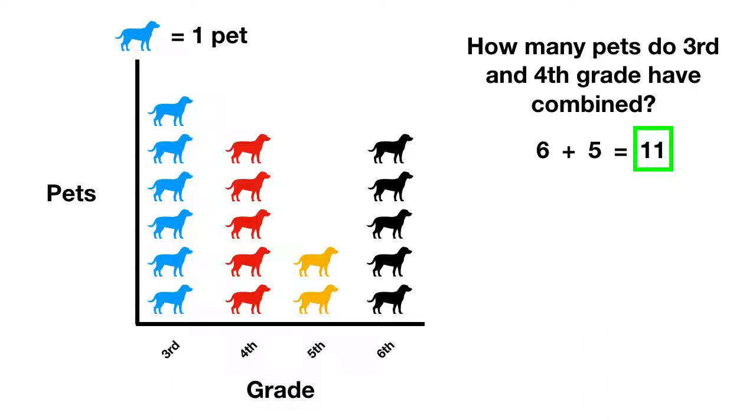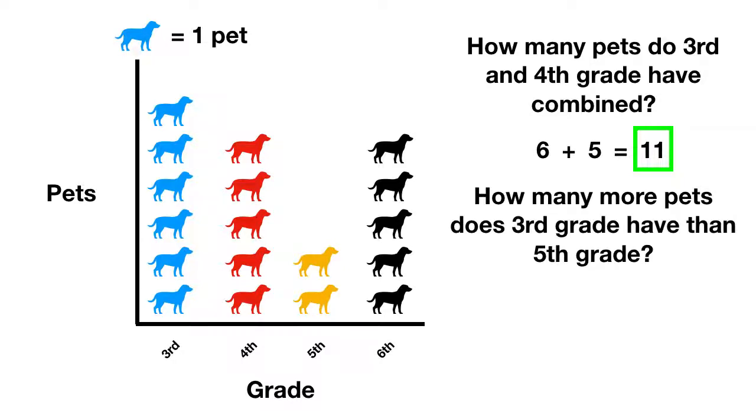The next question, how many more pets does third grade have than fifth grade? Well, here we're comparing. We'll start by looking at third grade and find they have one, two, three, four, five, six. To compare, we'll subtract the amount fifth grade has, which is one, two pets. When we solve this, we find that third grade has four more pets than fifth grade.